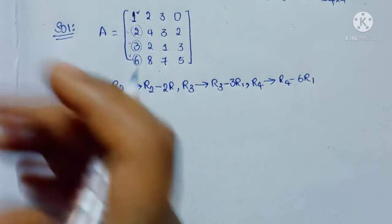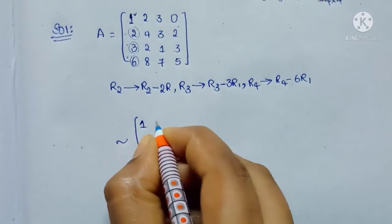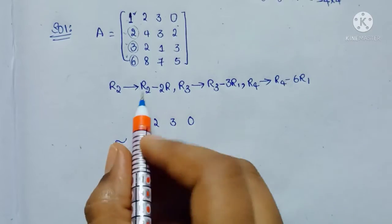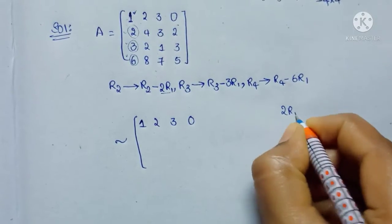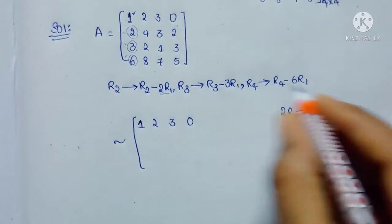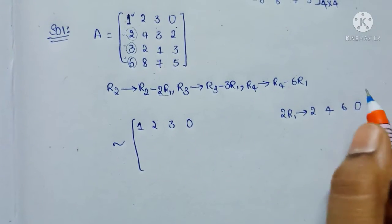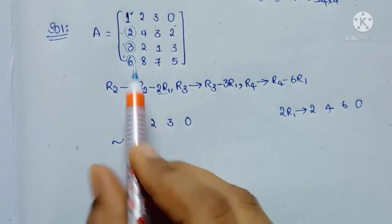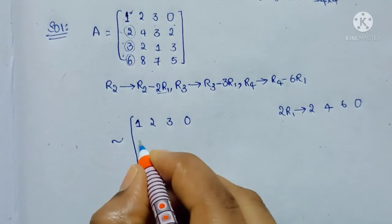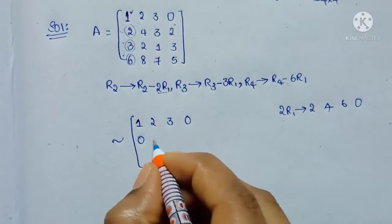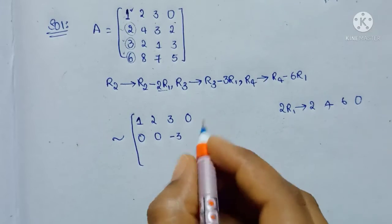There is no change in the first row: 1, 2, 3, 0. For R2, 2R1 means 2×1=2, 2×2=4, 2×3=6, 2×0=0. Subtracting R2 minus 2R1: 2−2=0, 4−4=0, 3−6=−3, 2−0=2.